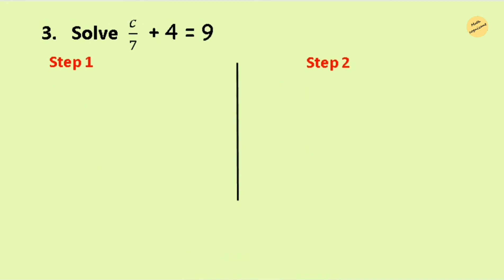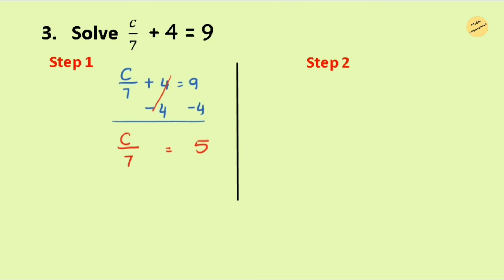In the next question we have division as well as addition. We need to handle the addition property first, doing the inverse — subtraction. Subtract 4 from both sides; it cancels on the left, leaving c over 7 equals 9 minus 4, which is 5. Now it's a division equation, so we do the inverse operation — multiplication. Multiply 7 on both sides: 7 times c over 7 equals 5 times 7. The 7s cancel, leaving c equals 35.